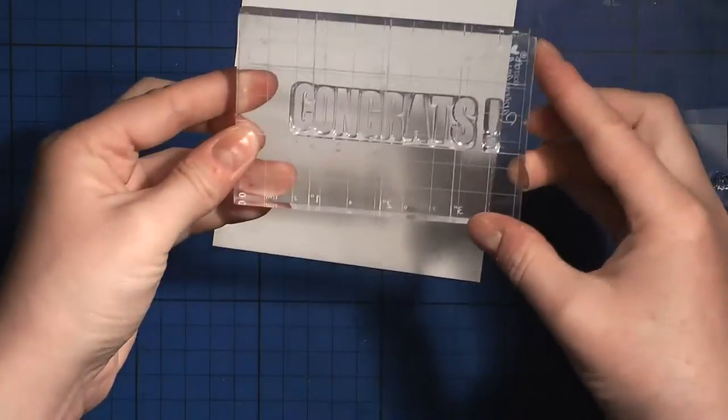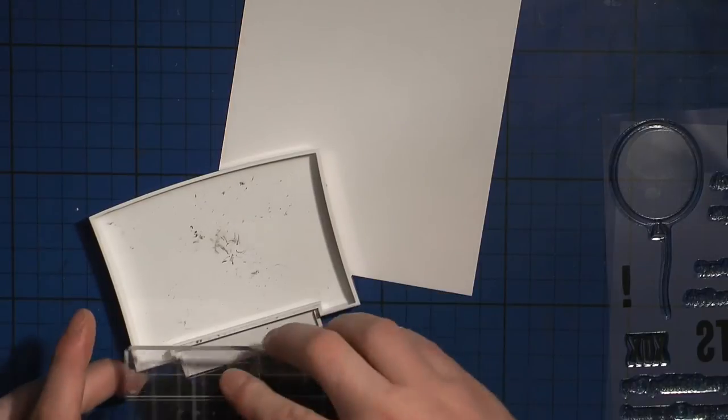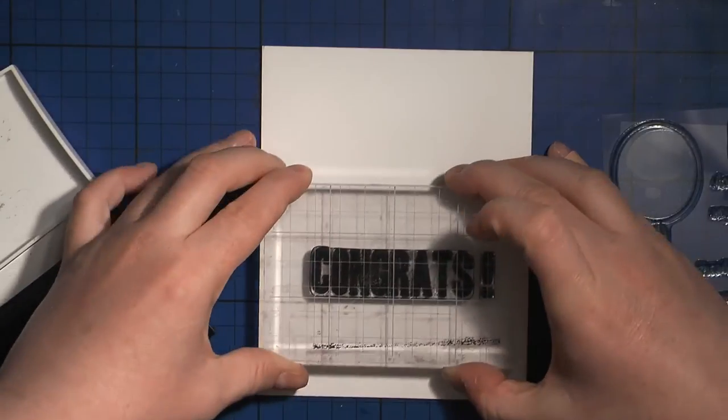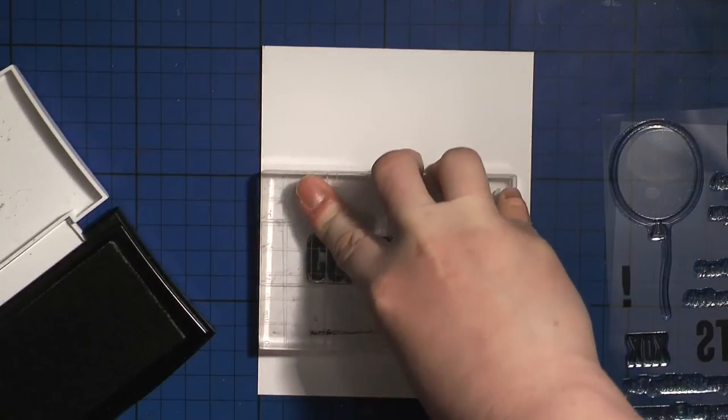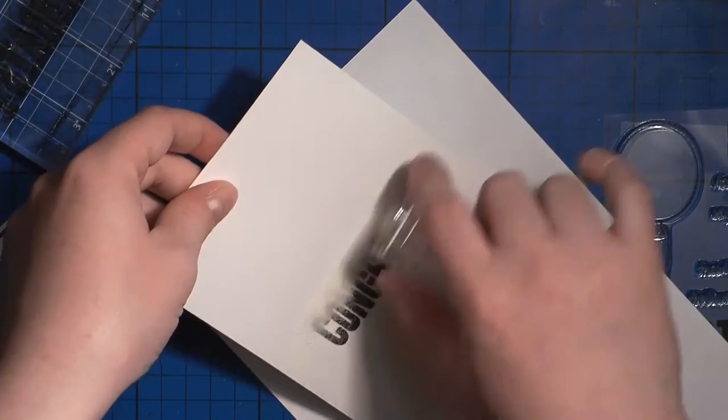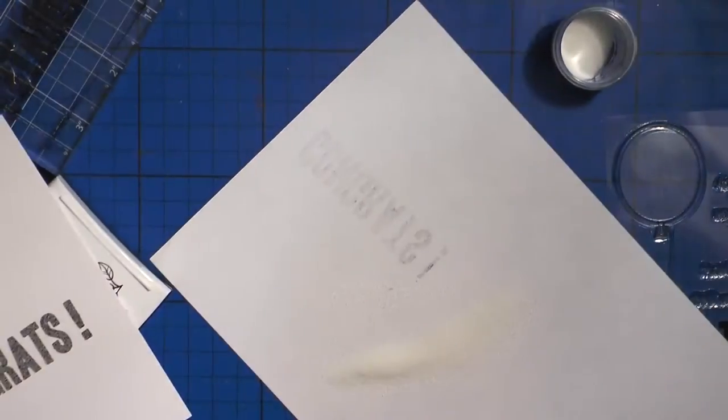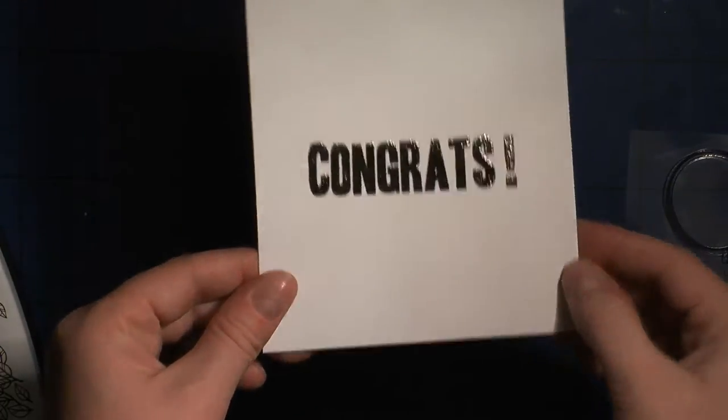So first off I'm starting out by stamping the huge sentiment congrats with the exclamation point. I'm using VersaFine Black Onyx ink and I'm stamping my sentiment and then I'm gonna heat emboss it using clear embossing powder. Here it is all glossy.